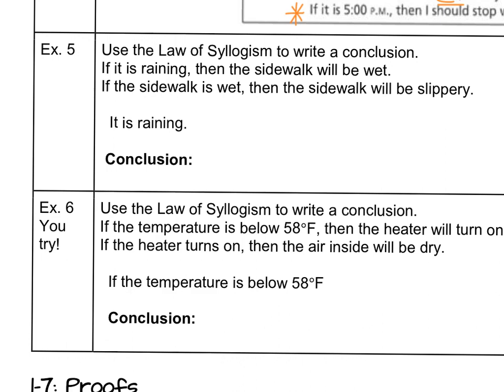Use the law of syllogism to write a conclusion. If it is raining, then the sidewalk will be wet. If the sidewalk is wet, then the sidewalk will be slippery. If we know these two statements to be true and it is raining, what is our conclusion? The sidewalk will be slippery. We eliminate the conclusion that matches the hypothesis and go right from the original hypothesis to the ultimate final conclusion.